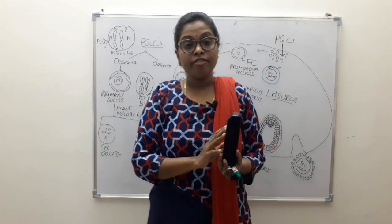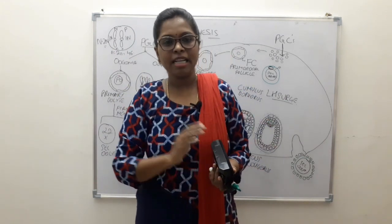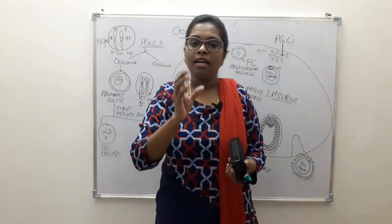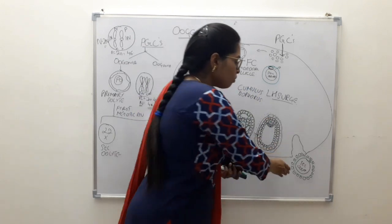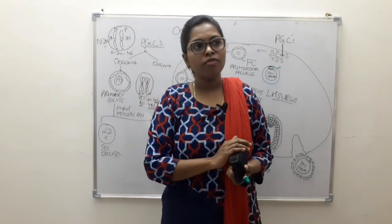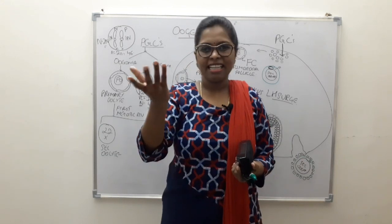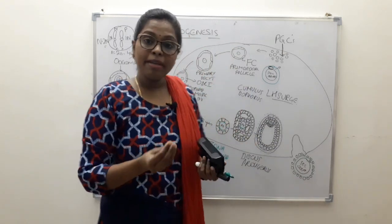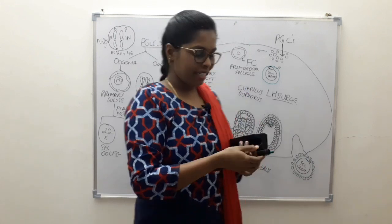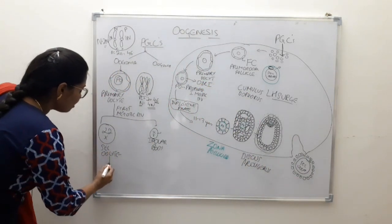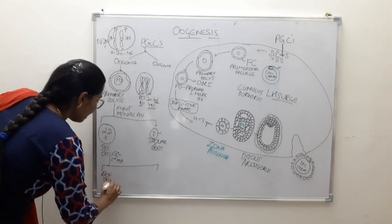If spermatozoa are deposited in the female genital tract, they ascend and reach the ampulla of the uterine tube to fertilize the secondary oocyte, forming a definitive ovum. If there is no male gamete, the secondary oocyte rests in the ampulla for around 24 hours, then dies and undergoes atretic changes. Just before fertilization, the second meiotic division is completed, giving rise to a definitive ovum and a second polar body.